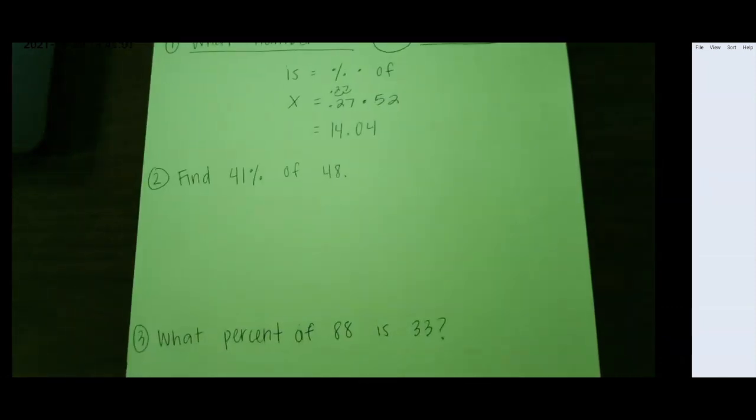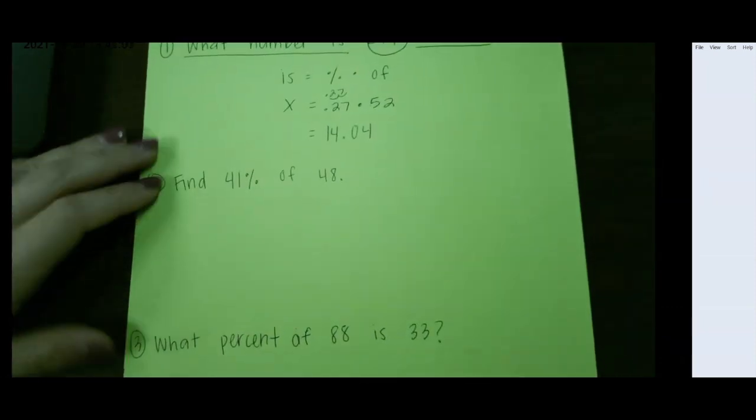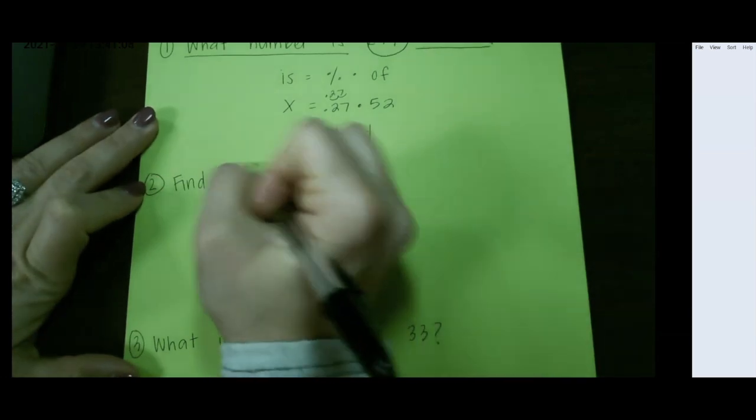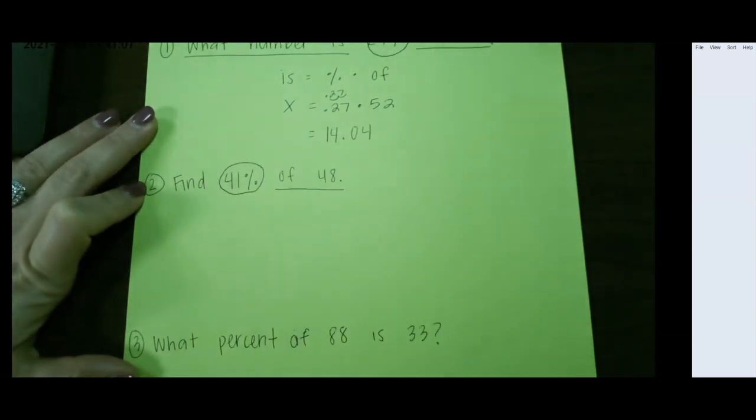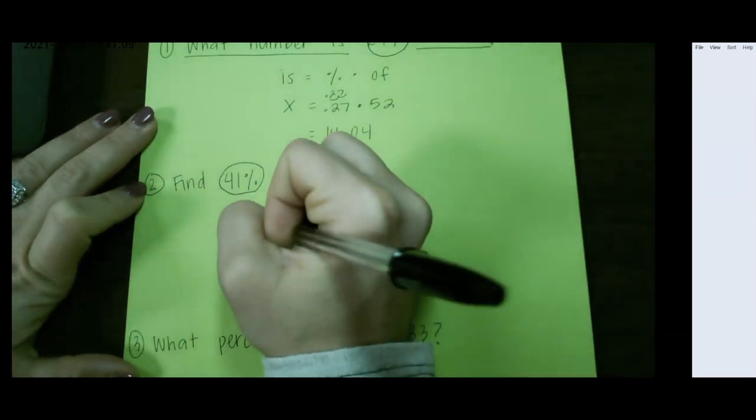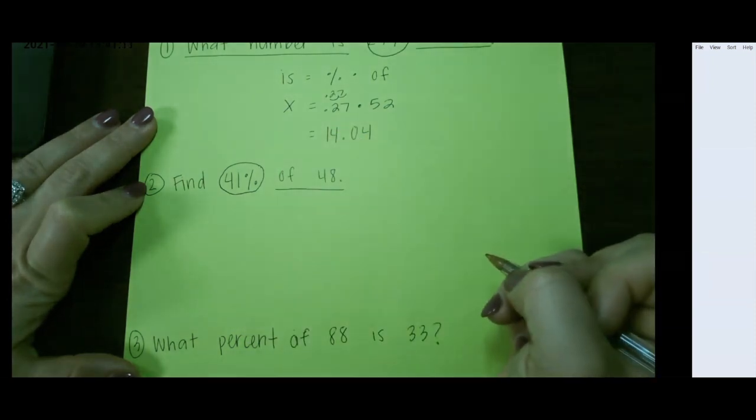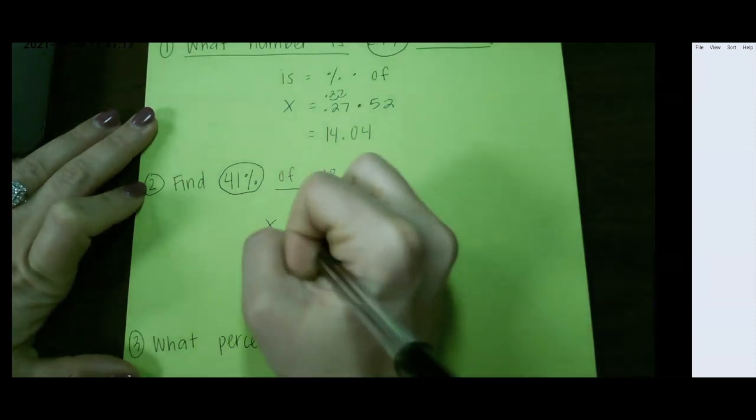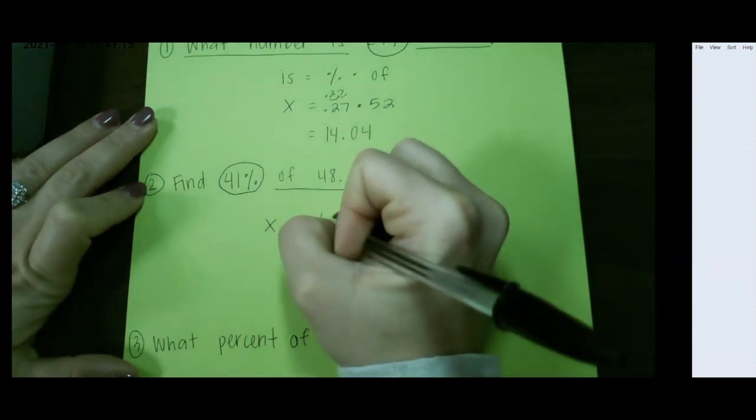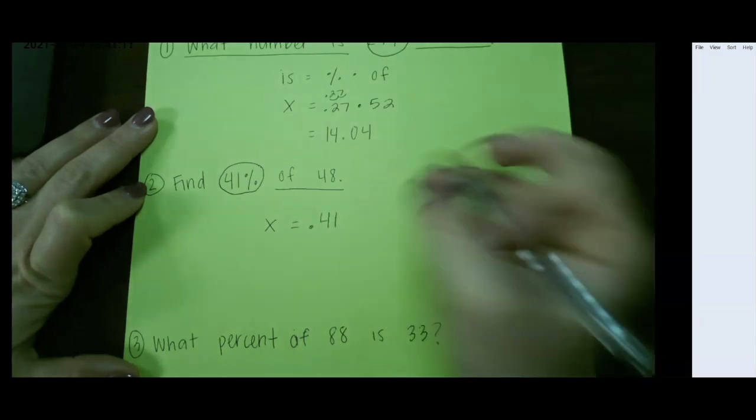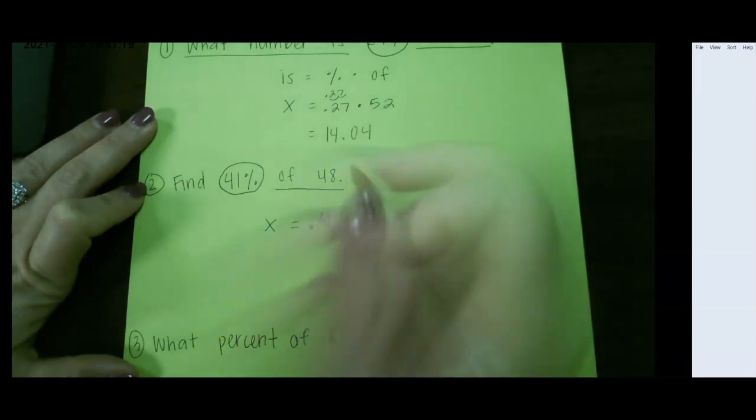For our next example, find 41% of 48. So we have 41% of 48. This time we are missing is again. So 41% as a decimal is 0.41 times 48.